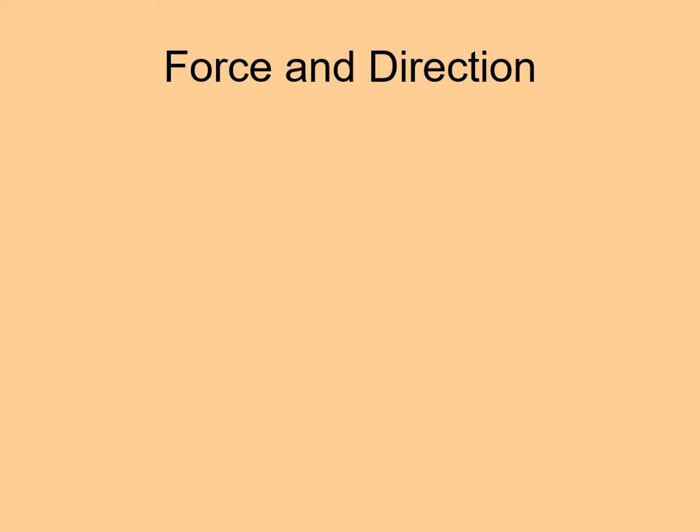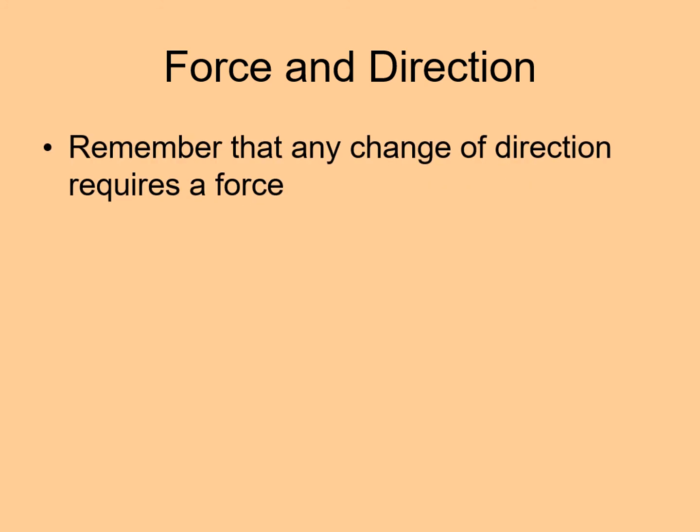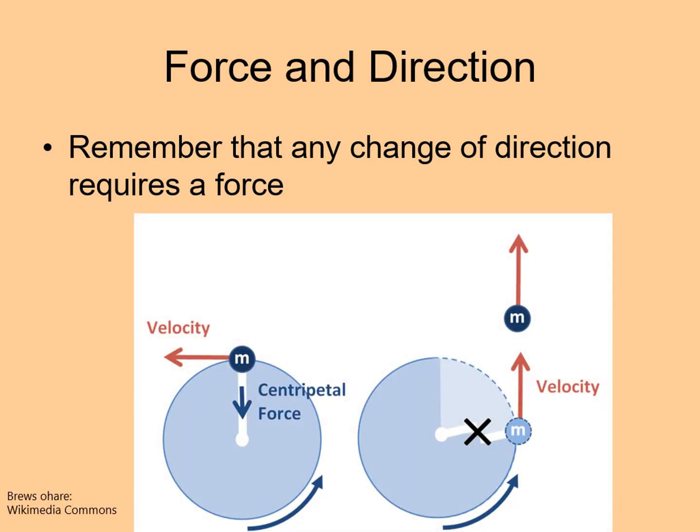There are a couple more things to remember about the second law. First, it applies to changes of direction, not just changes of speed. You need to appreciate this idea because it's important for understanding orbits. If something is moving in a curved path, like a circle, then there is a force acting on it even if it's always going at the same speed. In the case of a ball on a string, the force comes from the string pulling the ball toward the center. If the string breaks, the force is removed and the ball goes off in a straight line in whatever direction it was moving at that time.